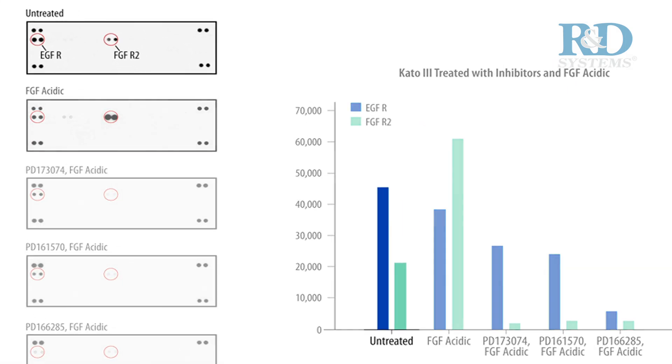While there is constitutive phosphorylation of both EGFR and FGFR2 in untreated Kato3 cells, an increase in FGFR2 phosphorylation was observed upon FGF treatment.